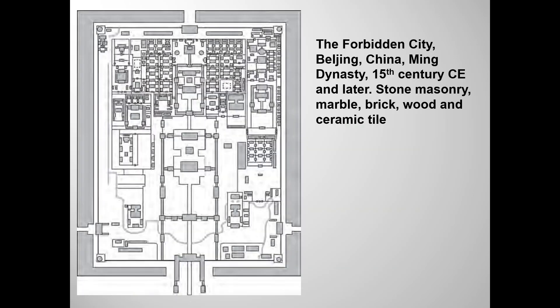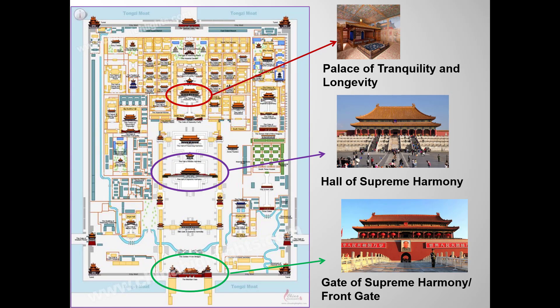We'll return to the video in a minute, but first I want to make some points about the sacred and political geometry of the Forbidden City. This plan is one of the five required images from the College Board. Here's a more helpful labeled version of the plan and the three specific buildings on the required works list with their placement. The final required image is an aerial view — I'll put that up in a minute.